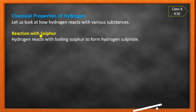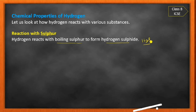Now the reaction with sulfur. Hydrogen reacts with boiling sulfur to form hydrogen sulfide (H₂S). You can see the reaction: when hydrogen reacts with boiling sulfur, it produces hydrogen sulfide.